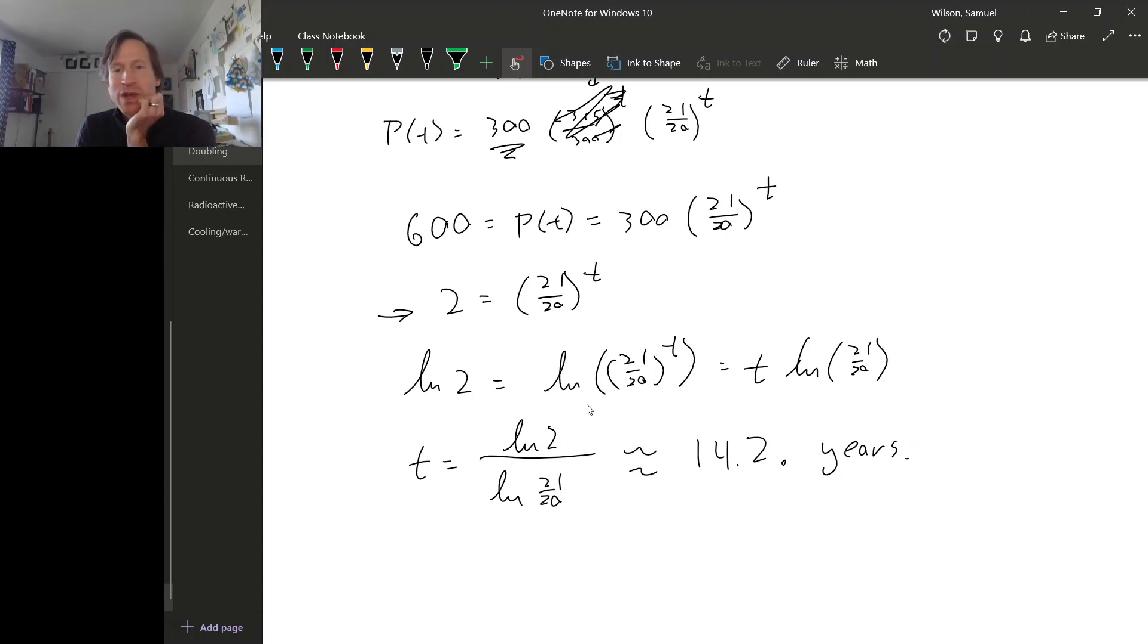Now if we rewrite this function using an exponential base E, so that's going to be 300 E to the K times T. And remember K is just the natural log of B. So we know that B is 21 over 20. So let's take the natural log of 21 over 20. So this is 0.0488 times T.